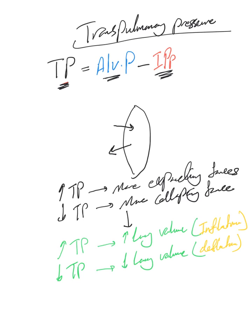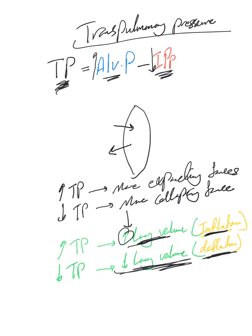I want to reinforce that inflation or deflation does not necessarily mean flow of air in or out. Inflation here strictly means an increase in lung volume or size, and deflation means a decrease in lung volume or size — expansion or shrinking of the lung. Any increase in alveolar pressure or decrease in intrapleural pressure will lead to an increase in transpulmonary pressure, and the opposite is also true: any decrease in alveolar pressure or increase in intrapleural pressure will lead to a decrease in transpulmonary pressure, with the results we just discussed.